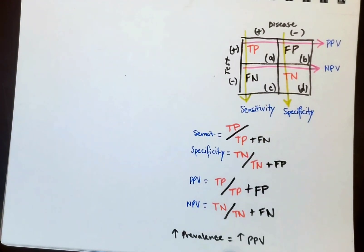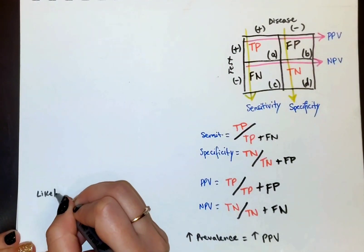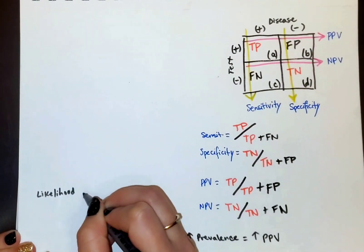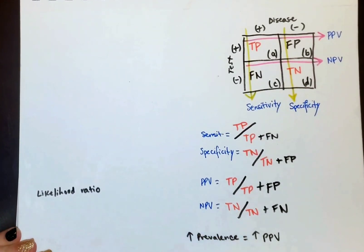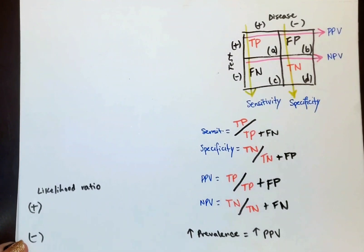So another thing to know is that prevalence correlates directly with positive predictive value. So as positive predictive value goes up, prevalence goes up. As negative predictive value goes up, the opposite is true. It goes down. Over here, I'm going to add likelihood ratio. We can do a positive likelihood ratio or negative likelihood ratio.